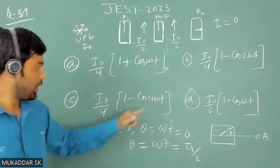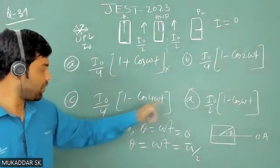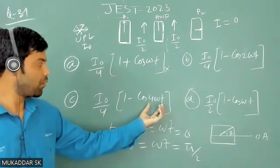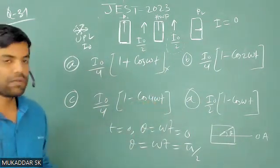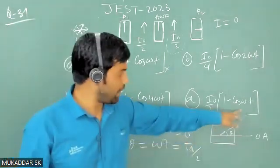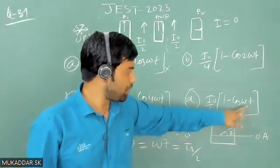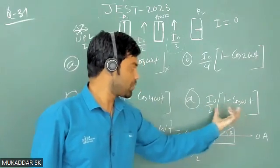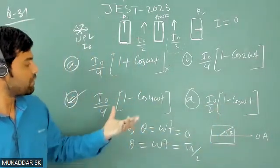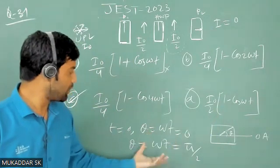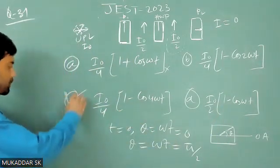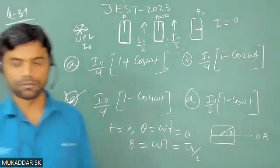Now substituting omega t equals pi/2 into the options: this option gives cosine(pi) which is −1, making it non-zero — that is not correct since intensity is 0. This option gives cosine(2*(pi/2 − 1)) which equals 0, so this is correct. This one gives cosine(pi/2) which is 0, giving a non-zero result — not correct. So only this option satisfies both conditions. The correct option is this one. Thank you.